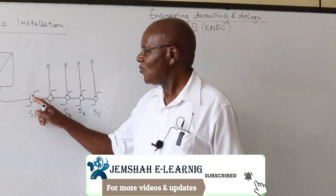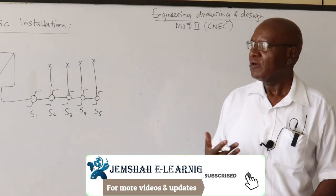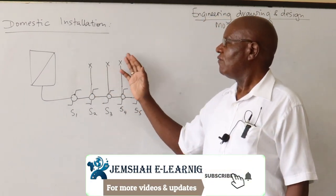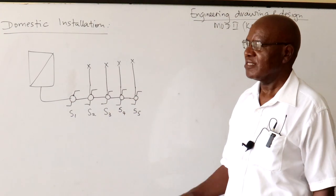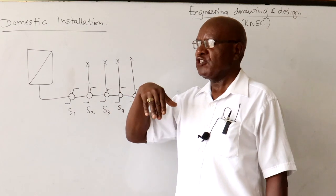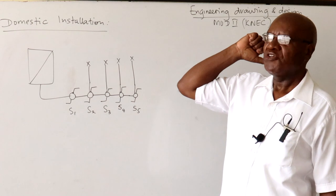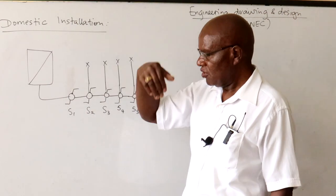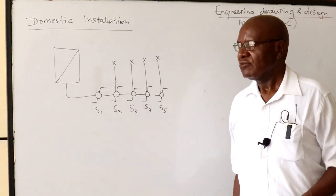Today we meet once more. Last time I gave you a problem to design a circuit for a staircase with four lights, such that as you go up the stairs and reach a switching point, once you flip it on, the light ahead switches on and the one behind you switches off. Then you go until you reach the top, and the same sequence should apply when coming back down the staircase.